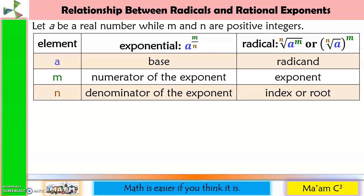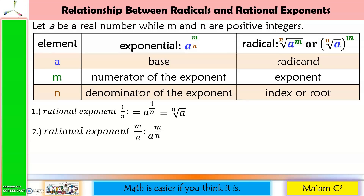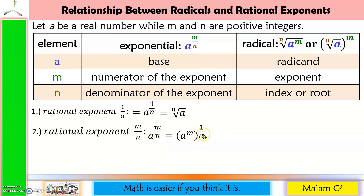We have three conditions. Number 1: rational exponent 1 over n, such as a raised to 1 over n. The denominator becomes the index or root, so we have the nth root of a. Number 2: rational exponent m over n, such as a raised to m over n. We can express this as the quantity a raised to m, raised to 1 over n. Applying power of a power, we multiply the exponents to get m over n, so the denominator becomes the index or root of the radical — giving us the nth root of a raised to m.